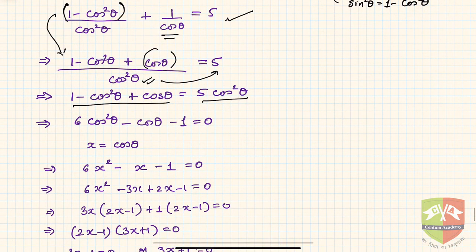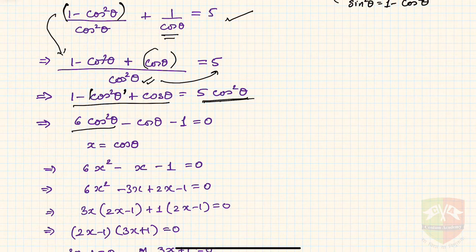Simplifying further, -cos²θ and 5cos²θ together give 6cos²θ. Moving cosθ to the other side, we get 6cos²θ - cosθ - 1 = 0. This is the final equation.